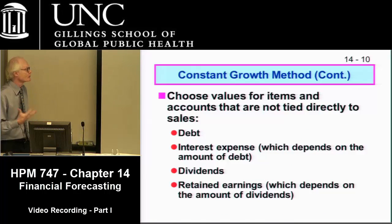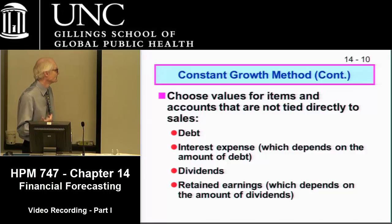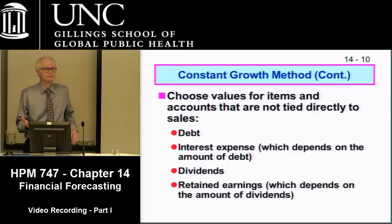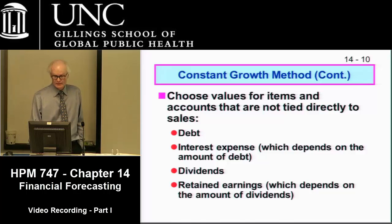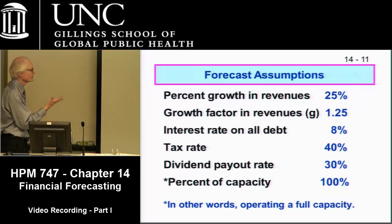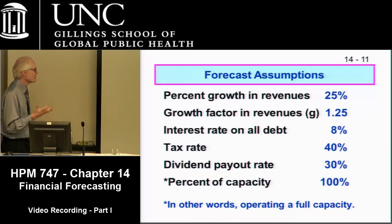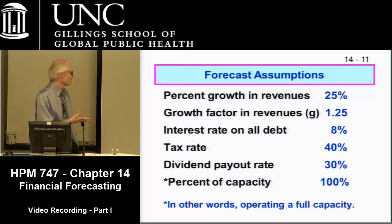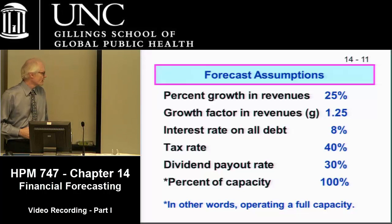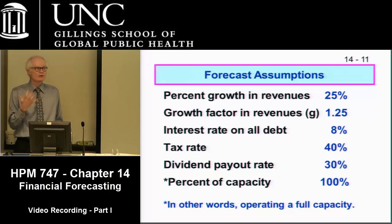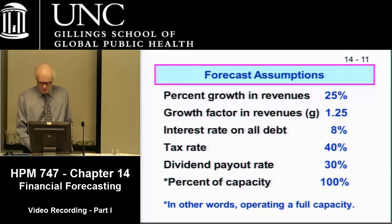Some items are not directly tied to revenues: debt, interest expense, dividends, and retained earnings, which depends on the amount of dividends. So the key in these models is you input all this data. For this simple example, we're going to assume there's going to be a 25% increase in revenues next year, an interest rate on the debt of 8%, a tax rate of 40%, a dividend payout ratio of 30%, and we're going to assume 100% capacity utilization — in other words, there is no excess capacity.